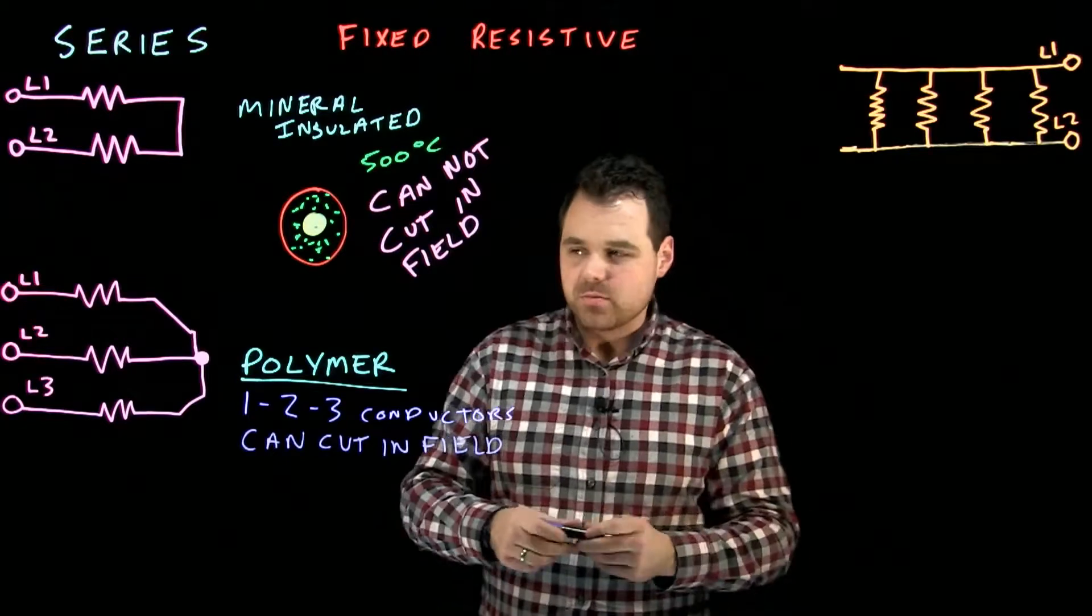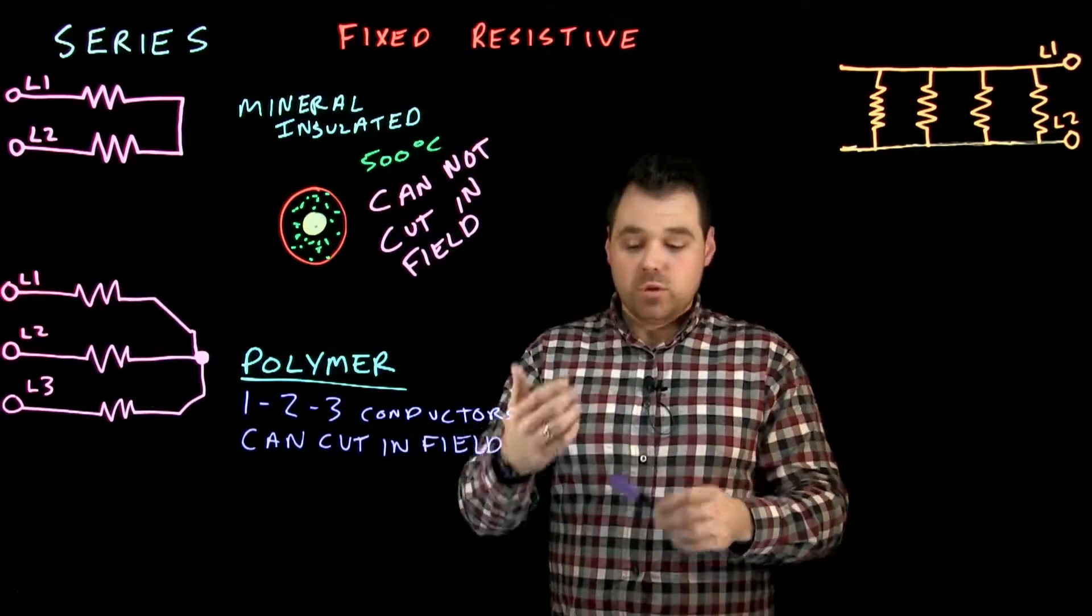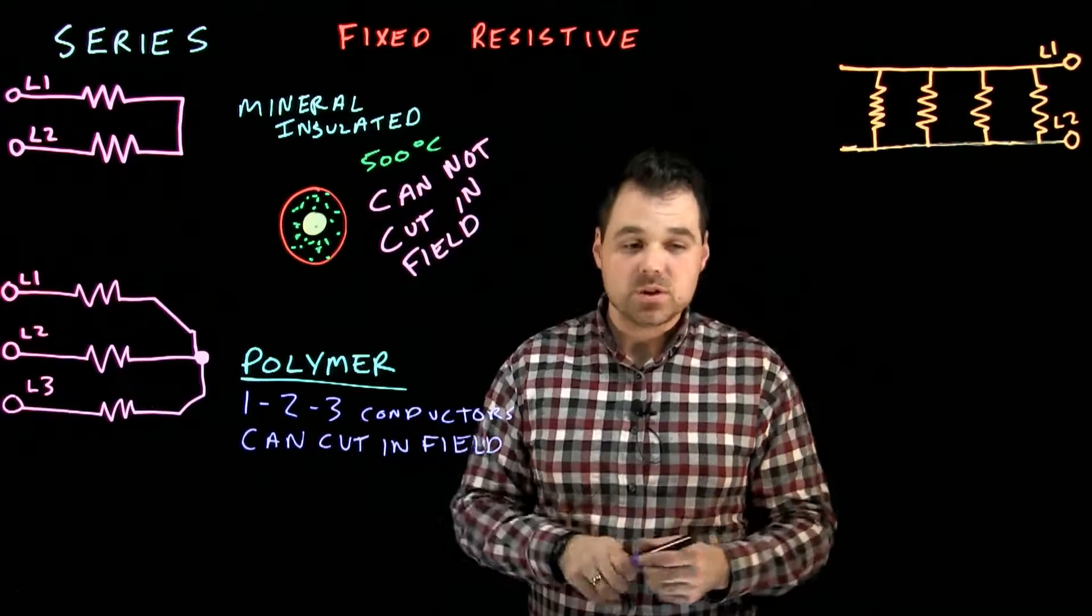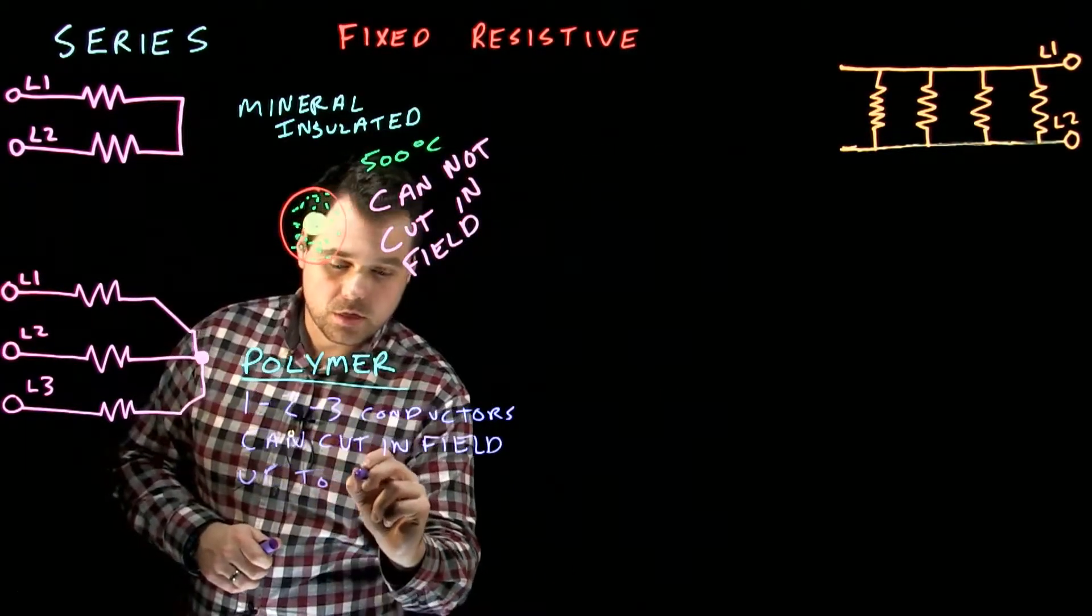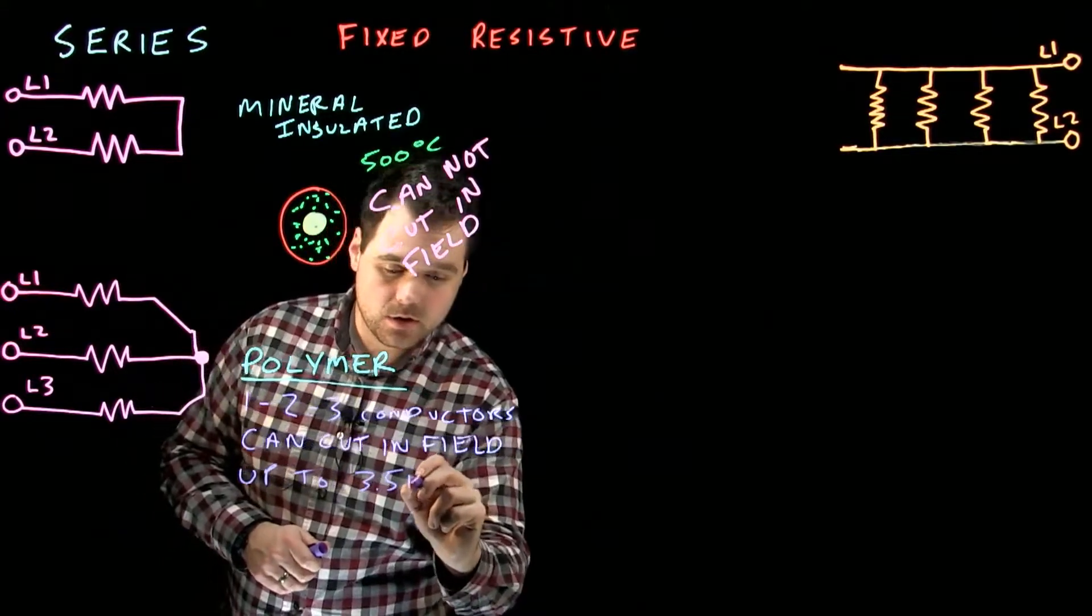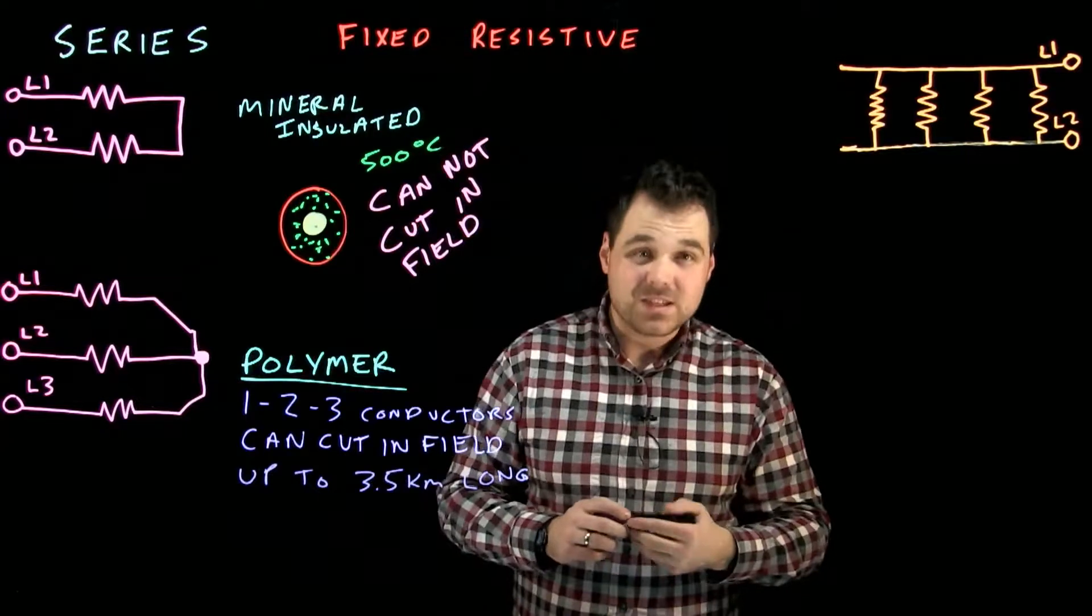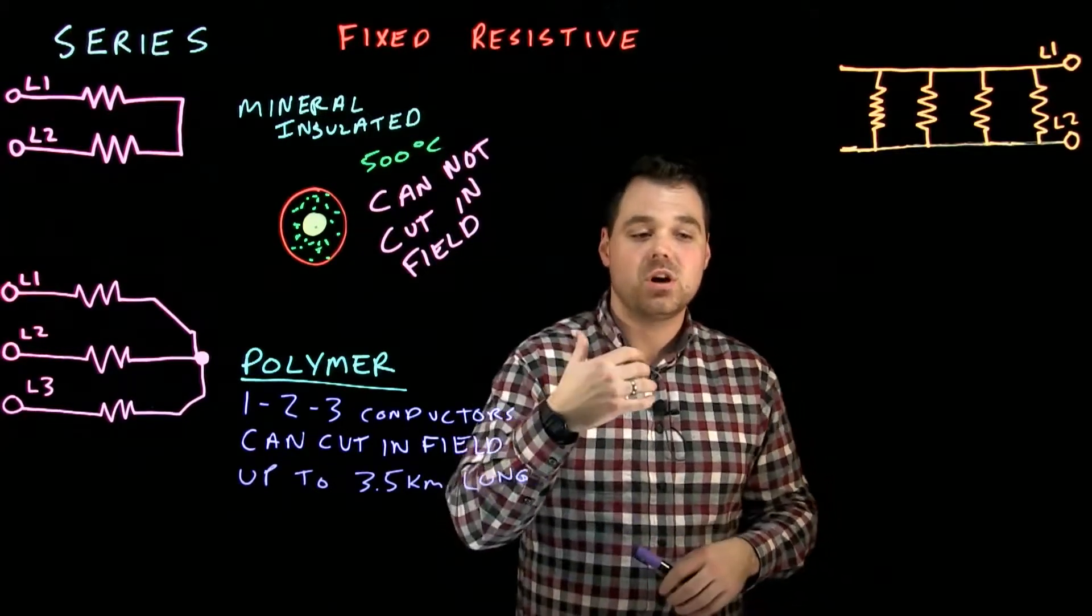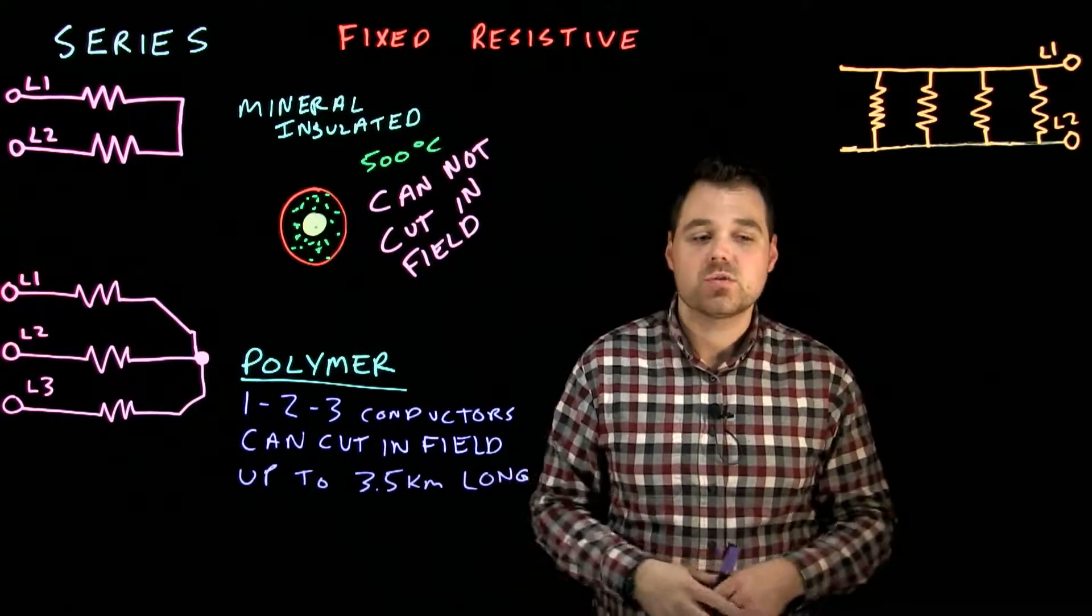Now, with the way they're built, a polymer insulated jacket around some conductors, you can actually run these polymer cables up to 3.5 kilometers long, or 3,500 meters. That's a huge benefit if we're using these on pipelines or things like that. Three and a half kilometers is quite a long stretch.